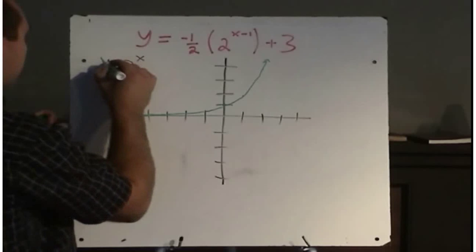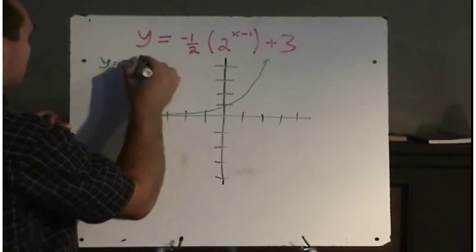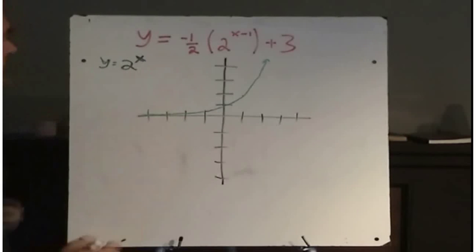That was the one I graphed in green, let's put these colors the same. Okay, so y equals 2 to the power of x. So now I'm going to do my transformations.